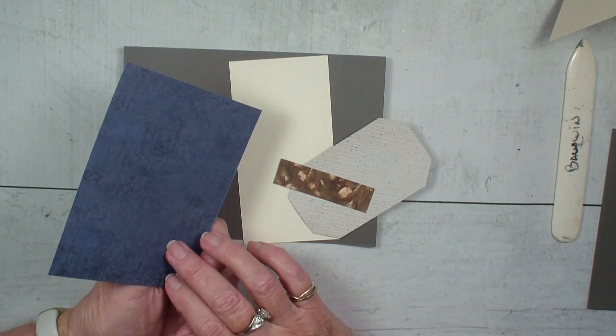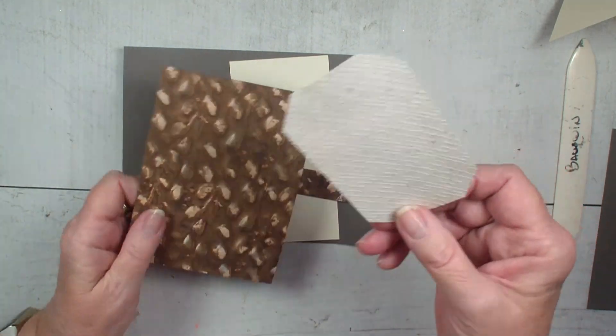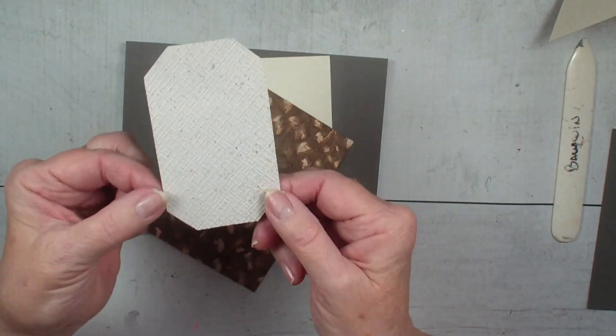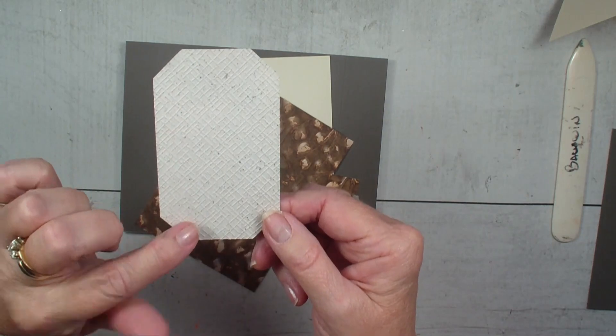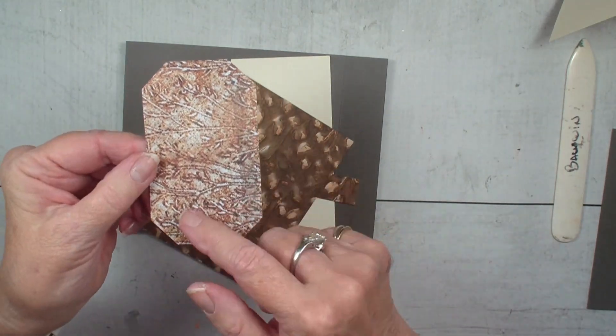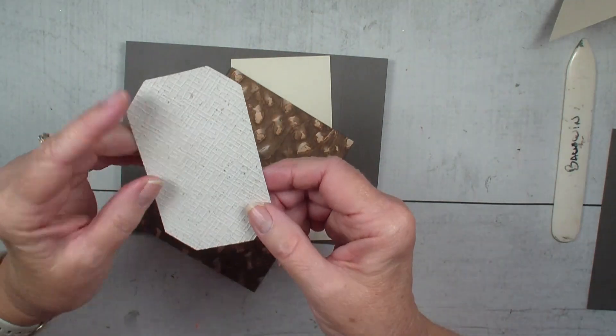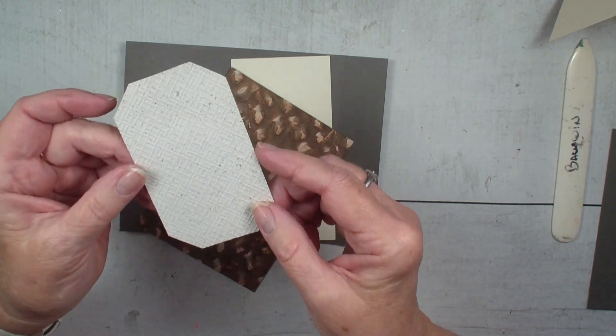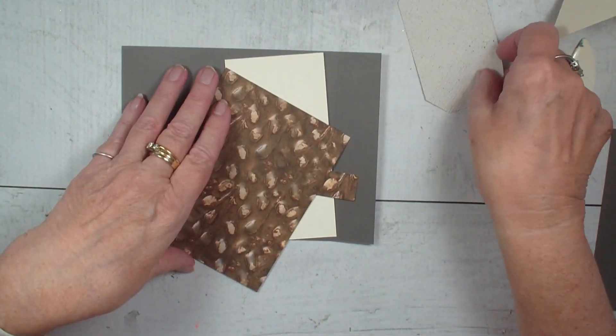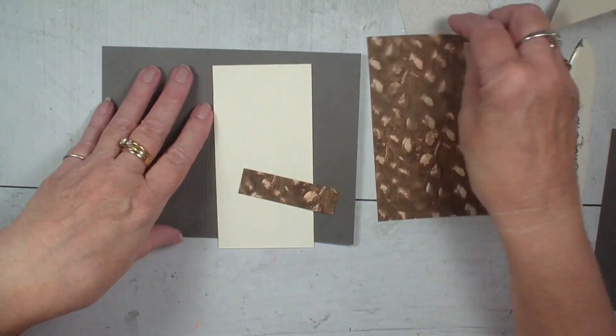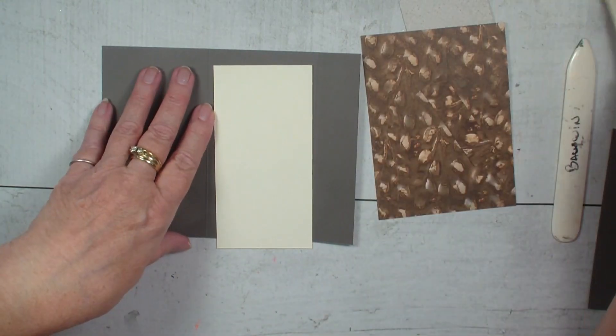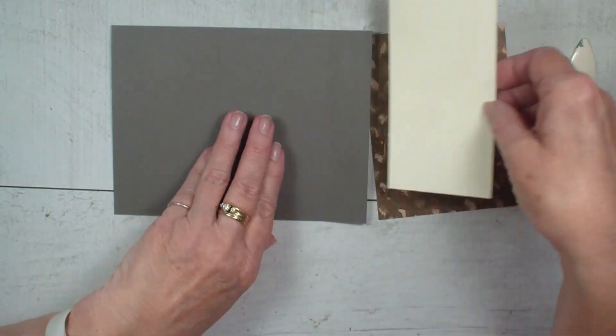On the other side it's got plain color. Now this I have already, this is the designer series paper. I've used the plain side. The other side has the print on it. I die cut it with a countryside corners die. So I've got a couple pieces of the designer series paper, a little piece of vanilla.